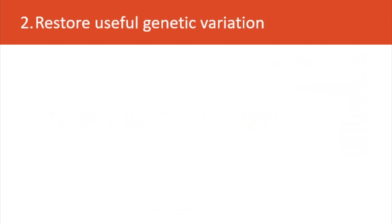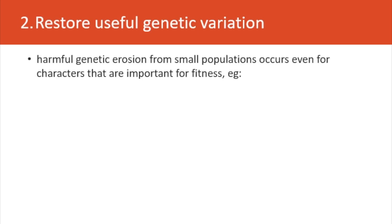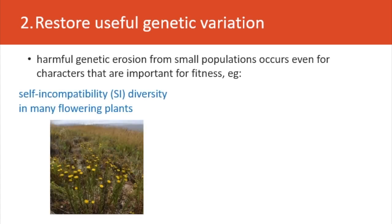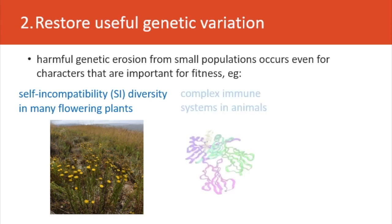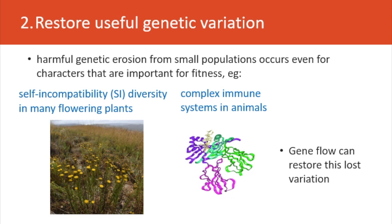Secondly, we would like to restore useful genetic variation to small populations that have lost it. Harmful genetic erosion from small populations occurs even for characters important for fitness — for example, self-incompatibility genetic diversity in flowering plants that determines whether they can breed, or complex immune systems in animals that strongly affect their ability to fight off disease. We can restore lost diversity in these characters by using gene flow.